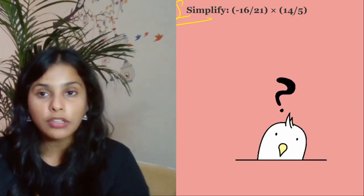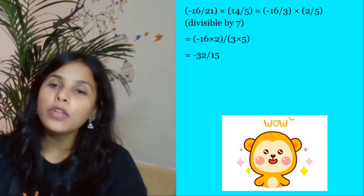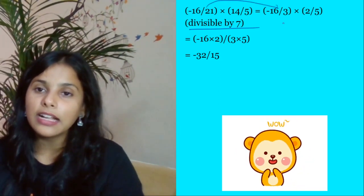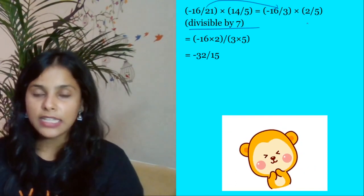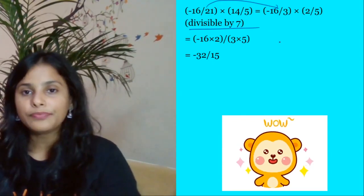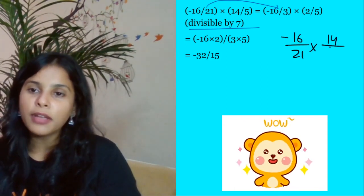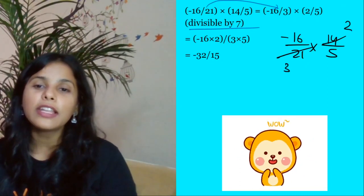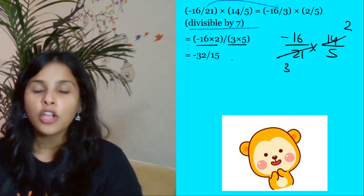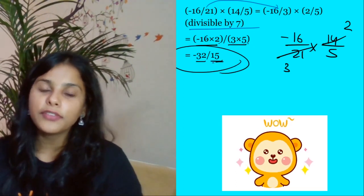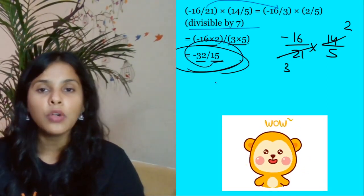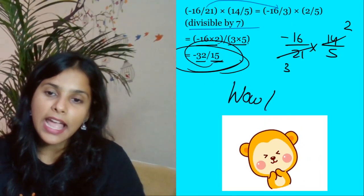Next question: simplify and find the product. We need to multiply -16/21 × 14/5. We know 14 and 21 are both divisible by 7, so cancel: 14/21 = 2/3. This gives -16/3 × 2/5. Now multiply: 16×2 = 32 in the numerator, and 3×5 = 15 in the denominator. So the answer is -32/15.